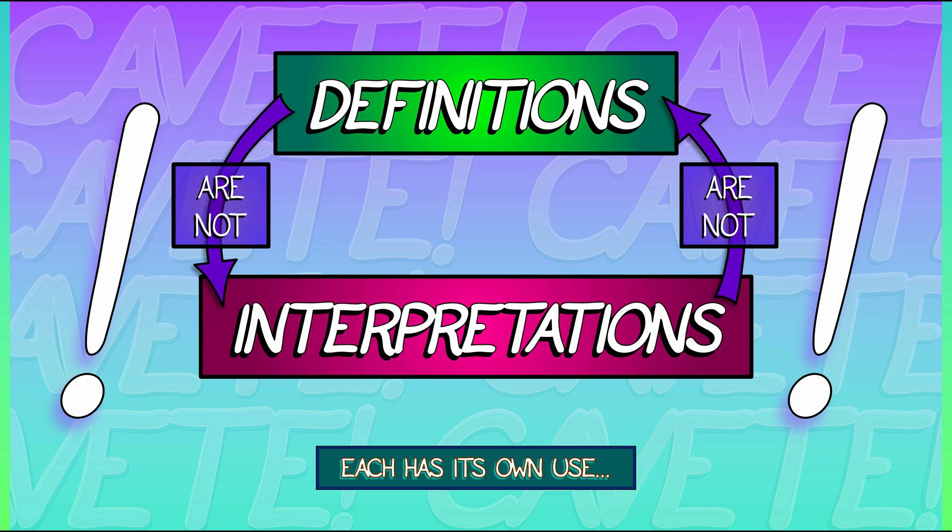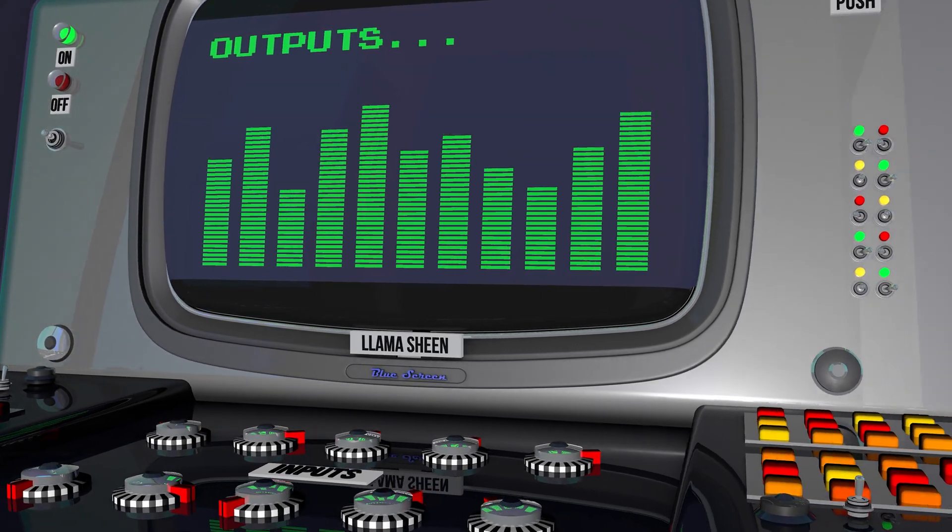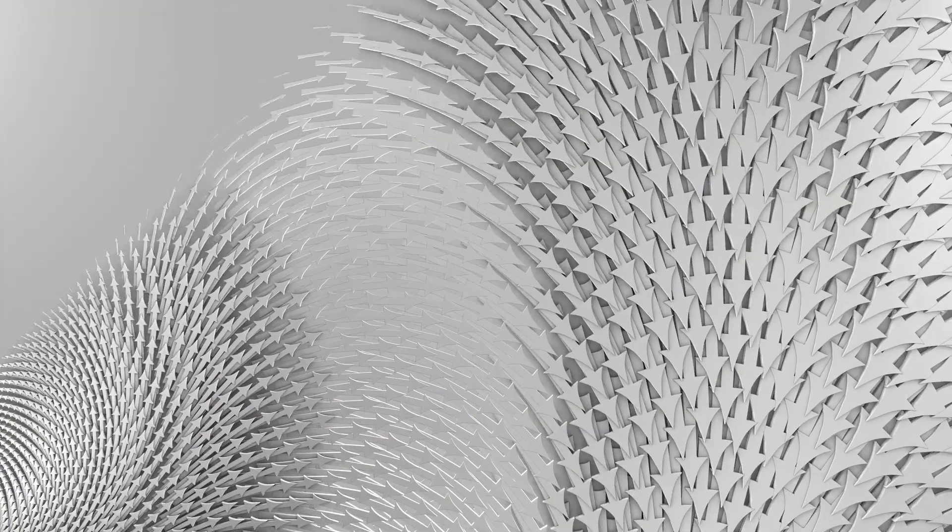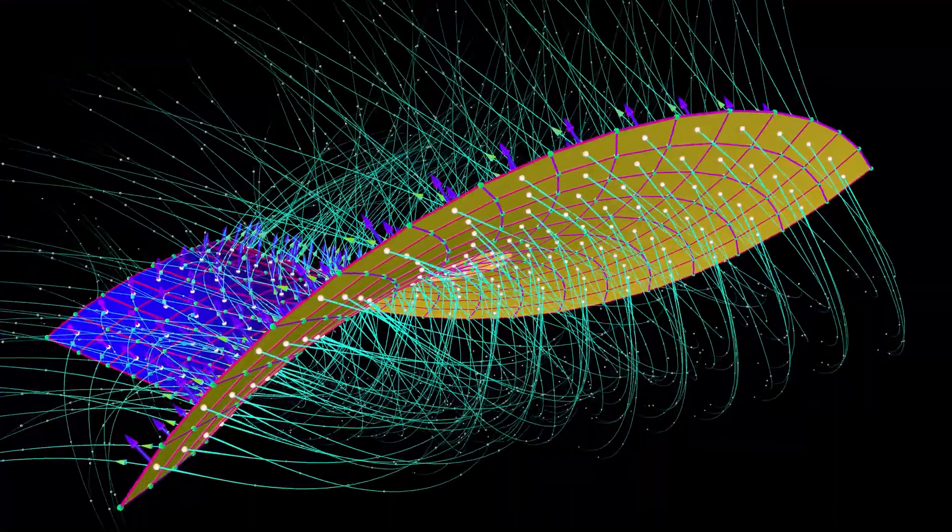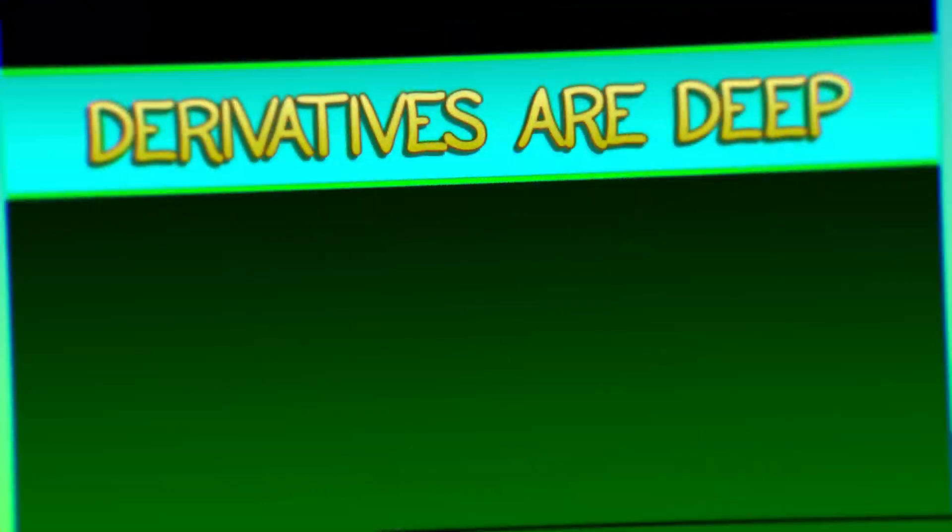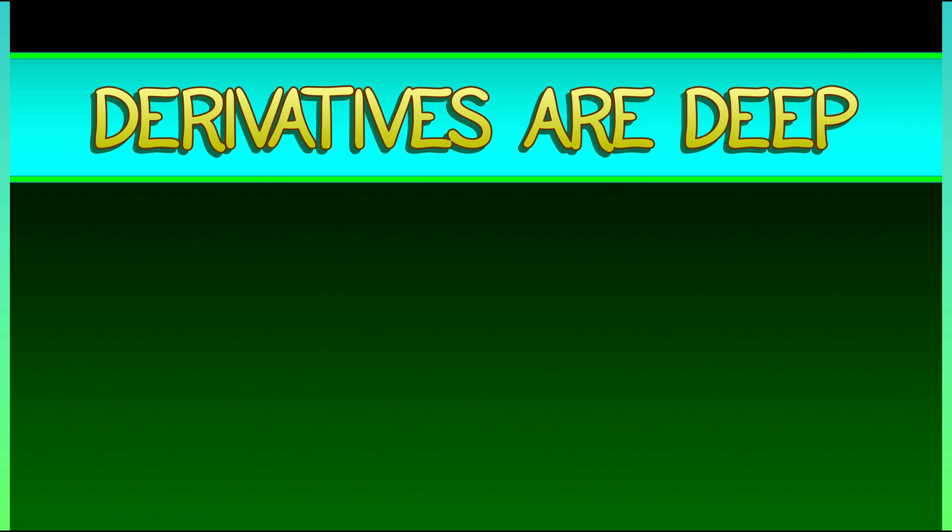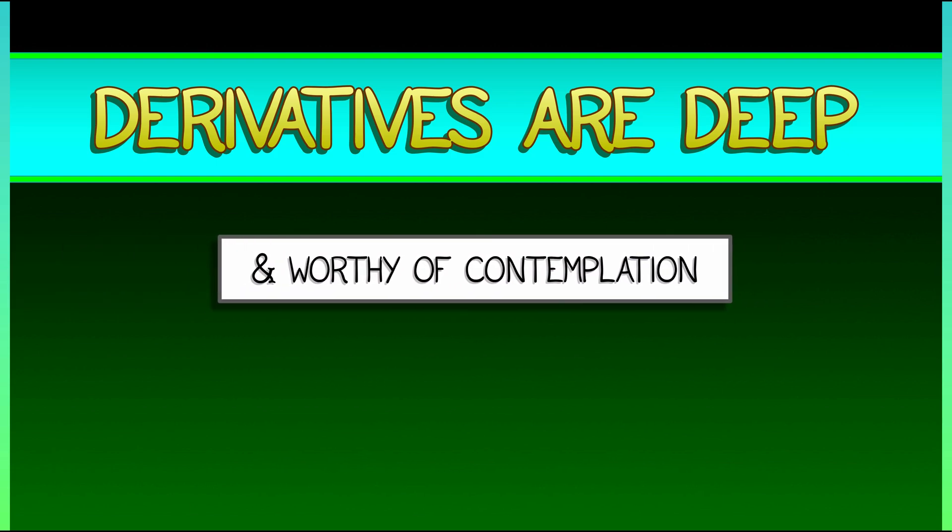But there are more interpretations out there. And slope is going to be among the least useful such interpretation when, in the future, you think about derivatives of multivariate functions, derivatives of vector-valued functions, derivatives of vector fields, and other objects which you have not yet encountered. Derivatives are deep, and they are very worthy of our contemplation.